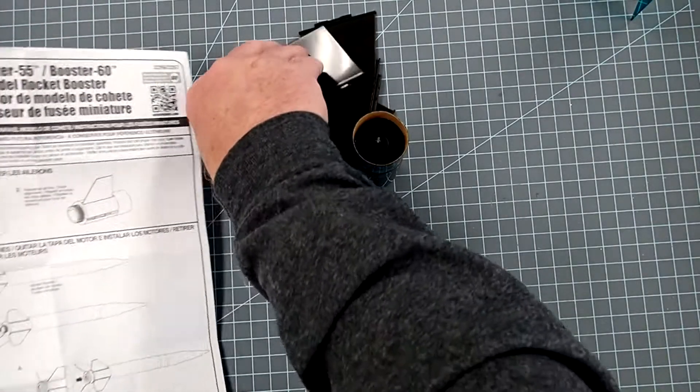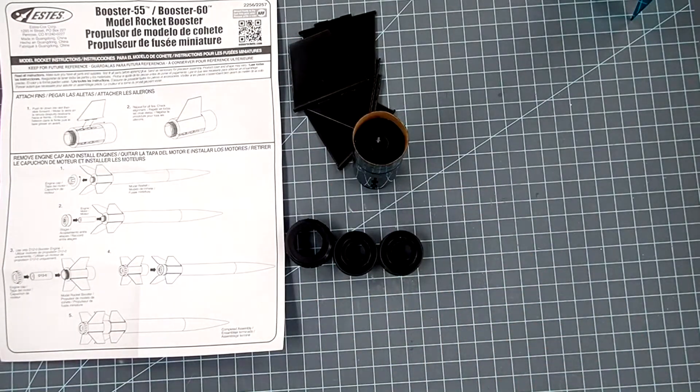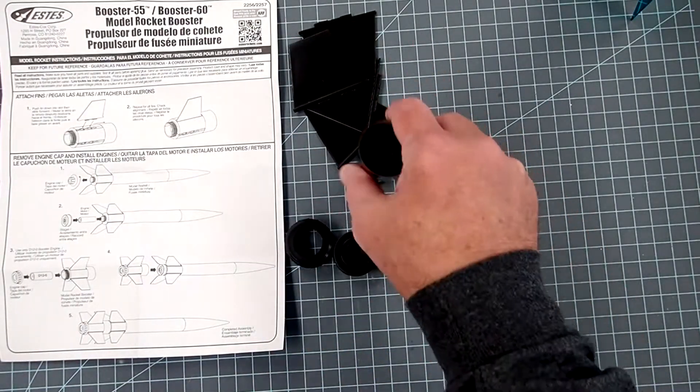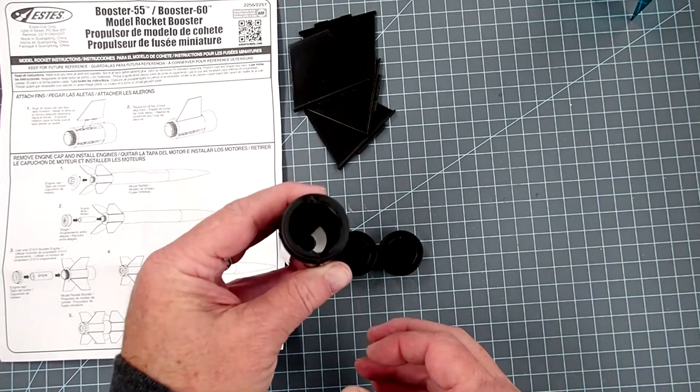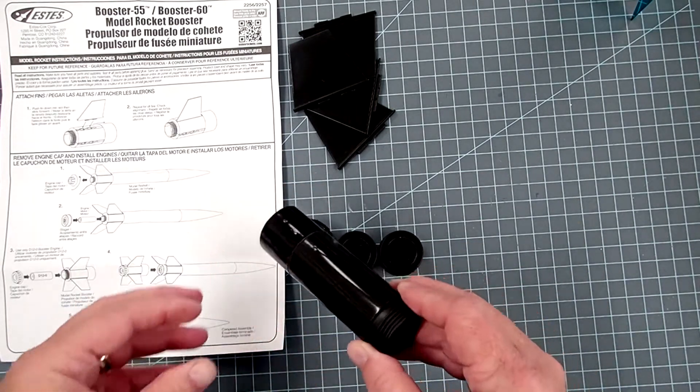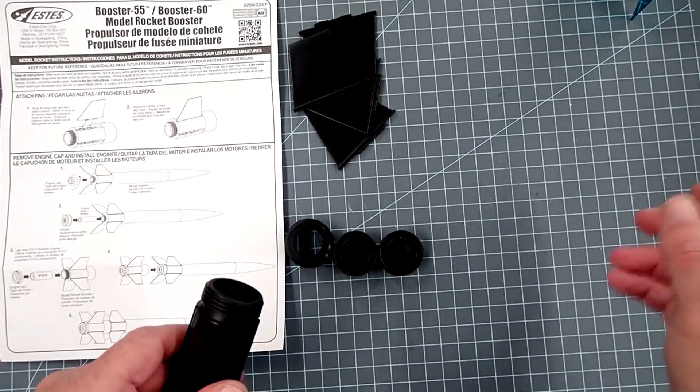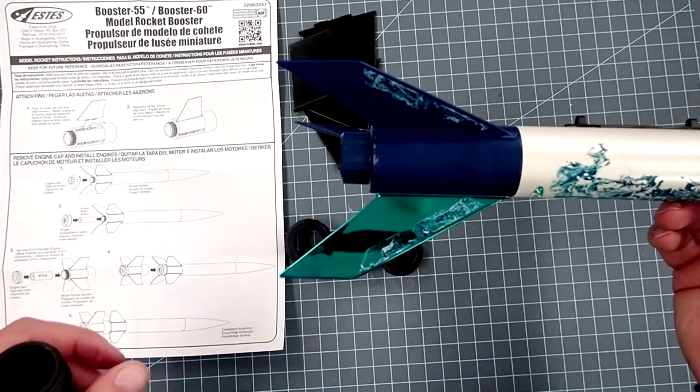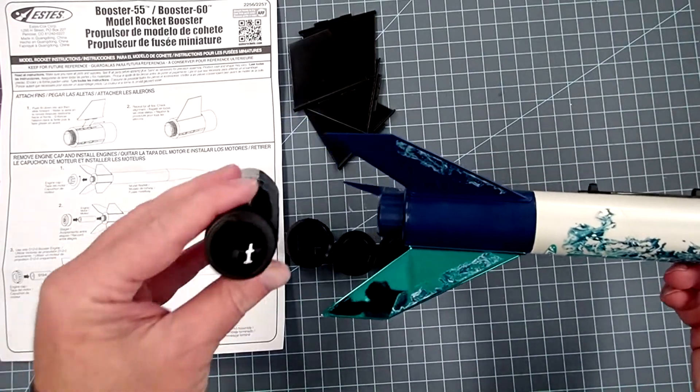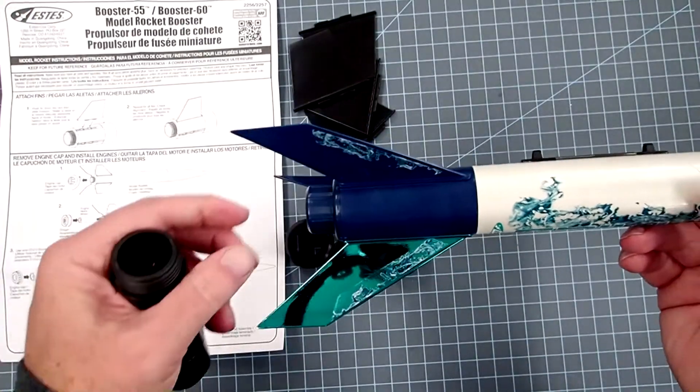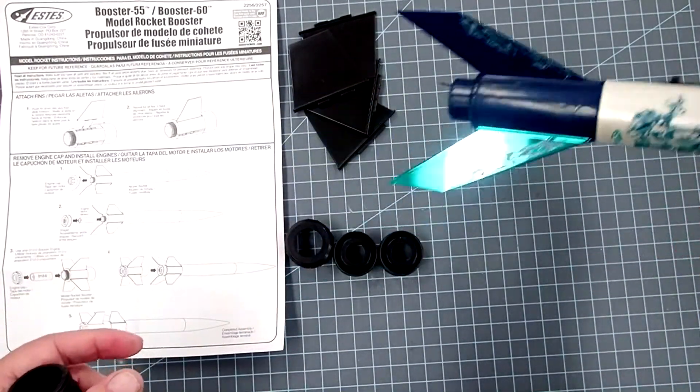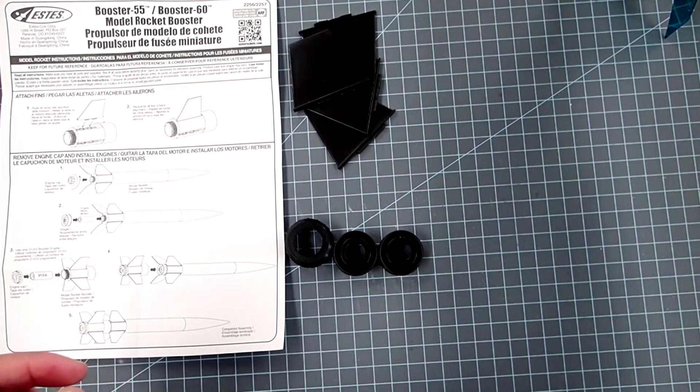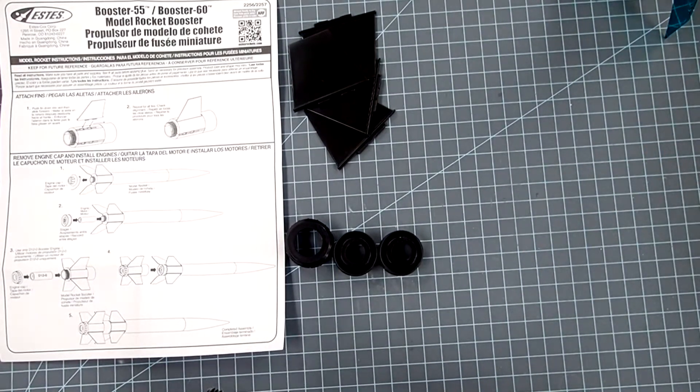Okay, now something to keep in mind is that this is meant for a D12-0 booster engine. Most of the rockets that it's going to attach to use 18 millimeter engines. So this is a 24 millimeter engine and this is an 18 millimeter engine mount.